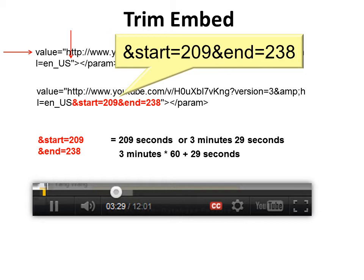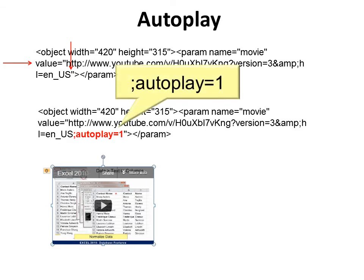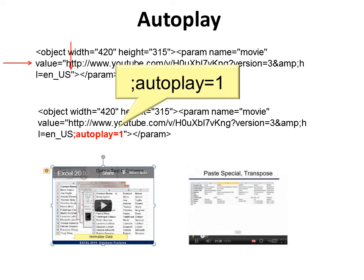You don't have to put an ending in — you can just have the start. Or you can just have the end without the start if you want to start at the beginning. The next edit is autoplay. If you don't want to have to click the start button, go again to 'value' and after the first quote, just before the second quote, put in 'autoplay=1' — 1 meaning yes, I want it to autoplay. As soon as you get on that slide, the video will start playing. This is great when you're using somebody else's computer and you're not sure you'll have the mouse, or you're nervous about finding the start button.